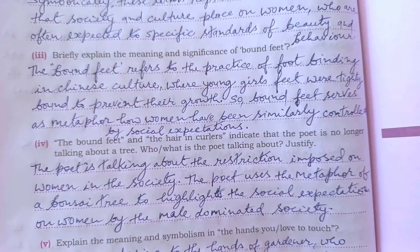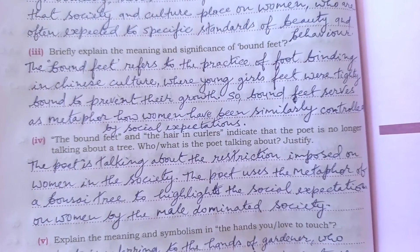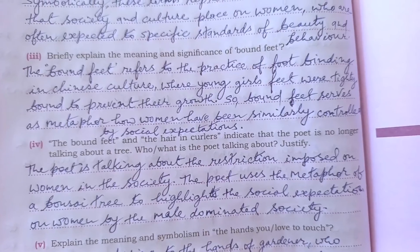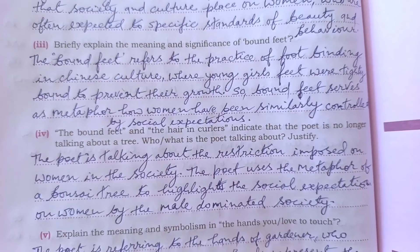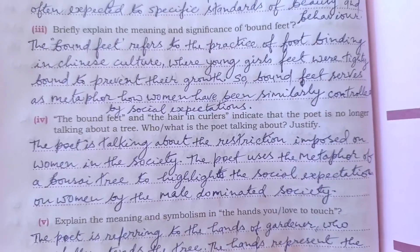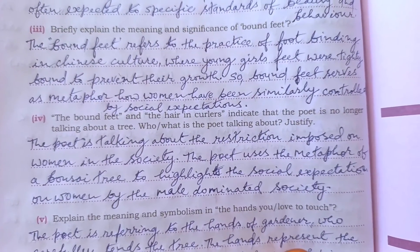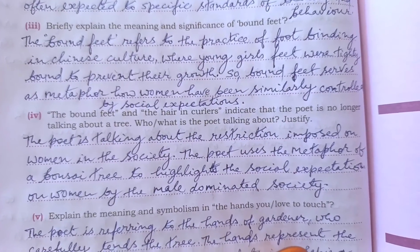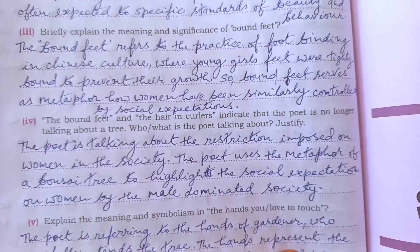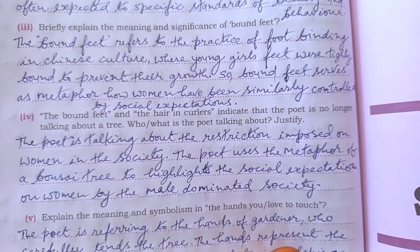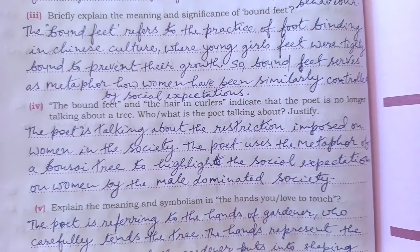Question four: the bound feet and the hair in curlers indicate that the poet is no longer talking about a tree — what is the poet talking about? The answer is: the poet is talking about the restrictions imposed on women in society. The poet uses the metaphor of a bonsai tree to highlight the social expectations placed on women by a male-dominated society.